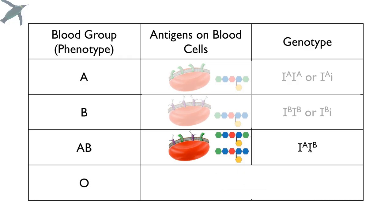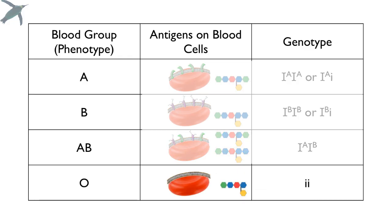Because A isn't dominant over B, or vice versa — so that's a really cool thing to notice. If you are blood type O, there's only one genotype that encodes the plain donuts: you had to get two copies of that little i. And that's how you inherit the four blood groups.